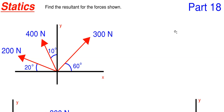This will be our 18th part in our components and resultant series under statics. What we have going on here is that we have to find the resultant for the three forces shown. When finding a resultant, all that means is that you're combining the amount of forces shown — in this case we have three — into a single force.